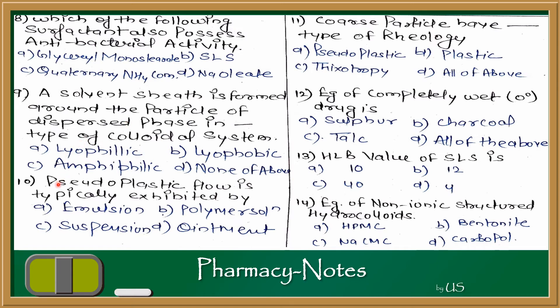Question number 10: Pseudoplastic flow is typically exhibited by what? Examples are Emulsion, Suspension, Ointment and Polymer Solution. If you remember that in suspension we used polymeric solutions which were non-Newtonian type of system. So this answer is B, Polymer Solution.